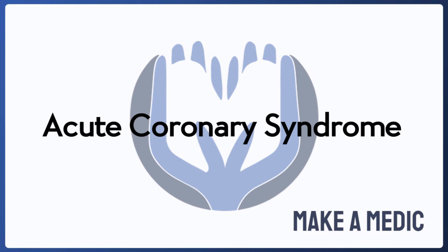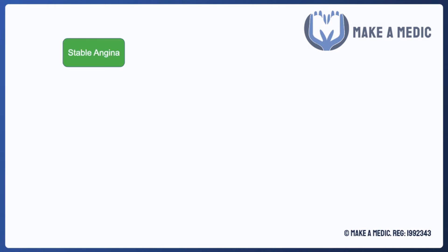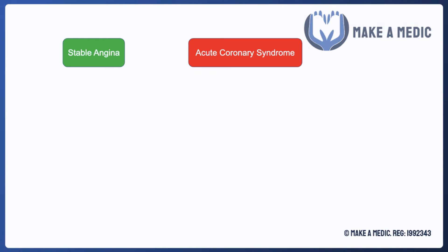Welcome to this Make-A-Medic tutorial. Today's topic is Acute Coronary Syndrome. When it comes to cardiac chest pain, it can be divided broadly into two main categories. At the less severe end of the spectrum we have stable angina, and at the more severe end we have this umbrella term called Acute Coronary Syndrome.